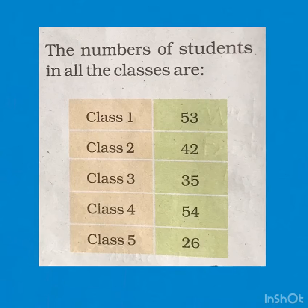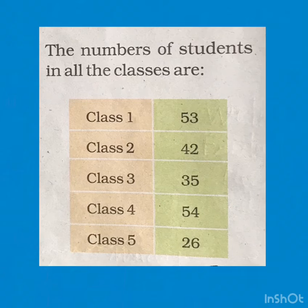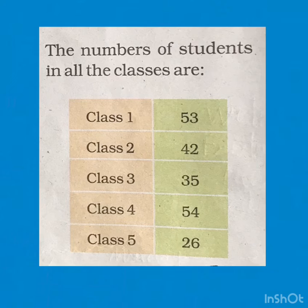Next topic is clean school day. We have to clean our school today. We make teams — each team has 10 students. The number of students in all the classes are: class 1 — 53, class 2 — 42, class 3 — 35, class 4 — 54, class 5 — 26.